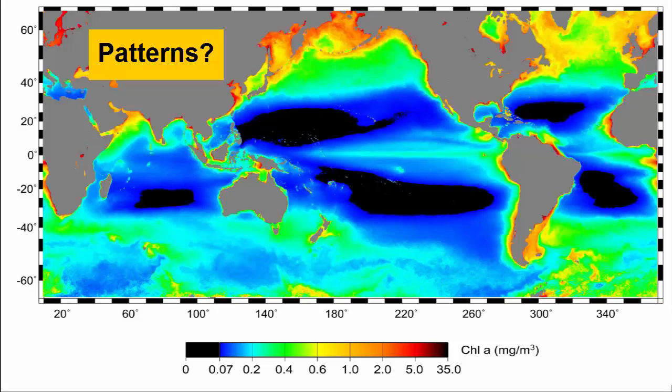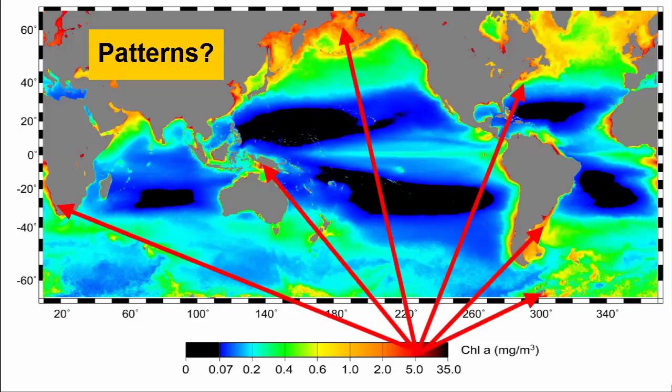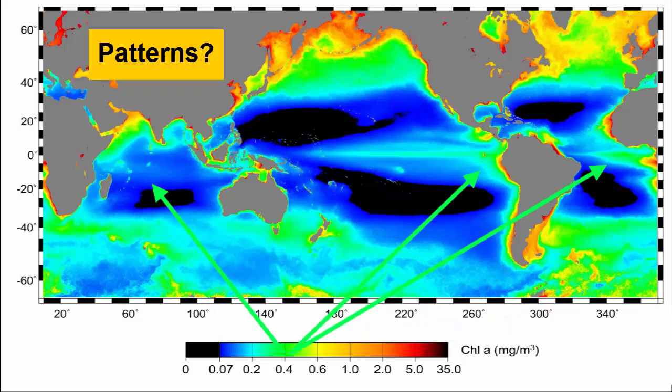For example, in the global chlorophyll map, we see large dark areas in the centers of the northern and southern Atlantic, northern and southern Pacific, and Indian oceans, where there appears to be no chlorophyll. We see high chlorophyll values in the Arctic Ocean, Antarctic Ocean, and along all coastlines. We see moderate values in strips along the equator, thicker in the east than in the west.